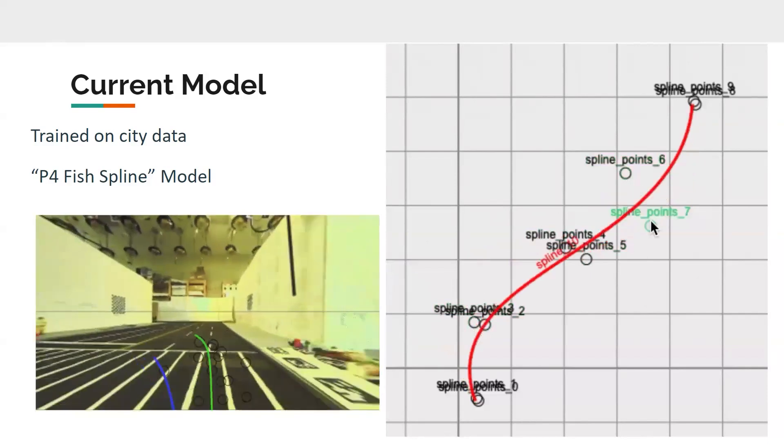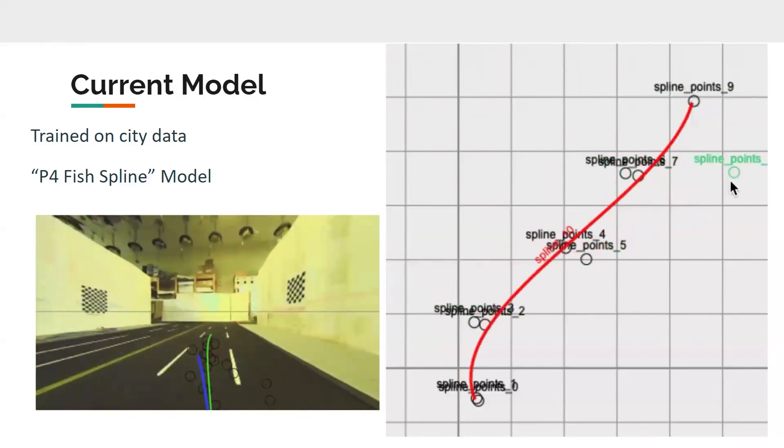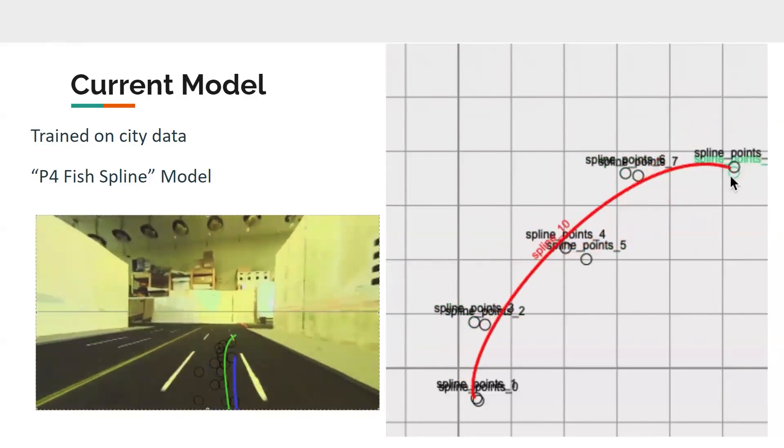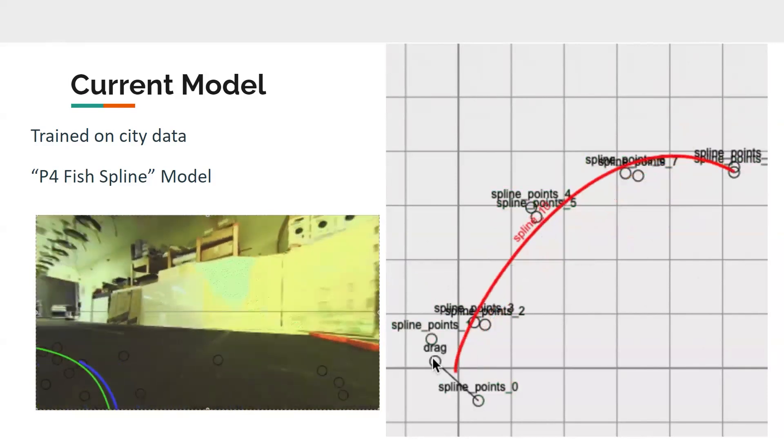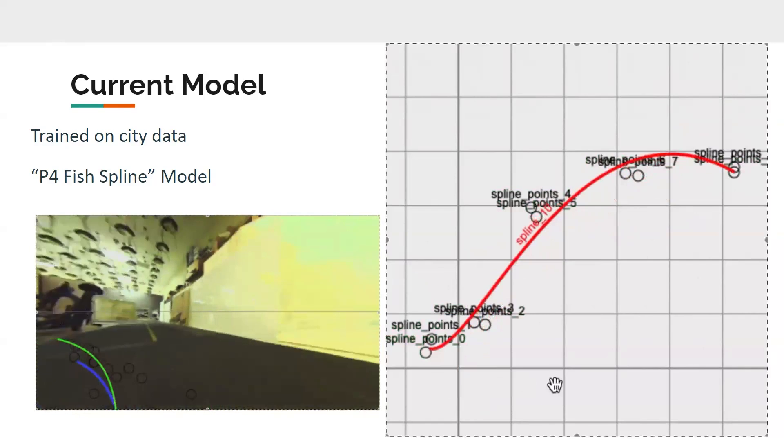So basically combining all those components from our last models, as well as the more advanced hardware, which is the Fisheye camera, which we'll be going over later, we're able to create a better model for the car to use while driving in the smart city.